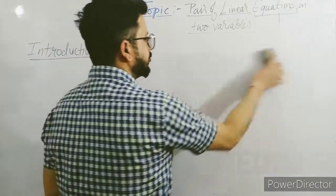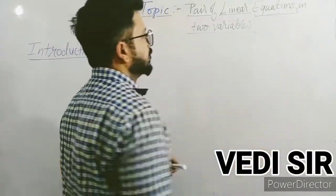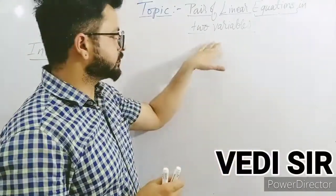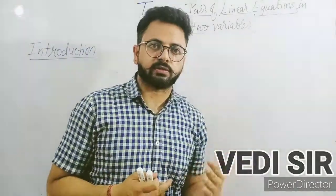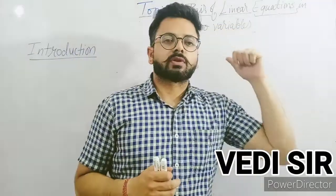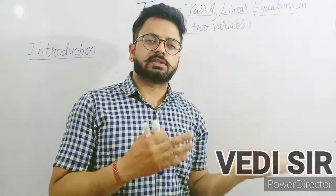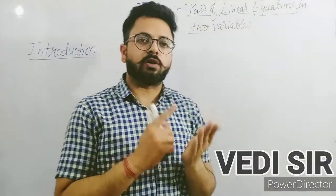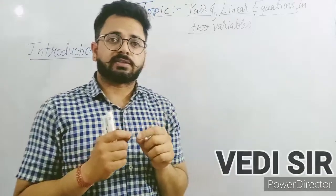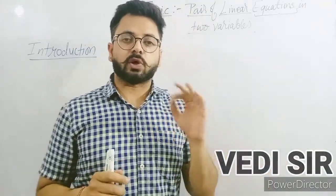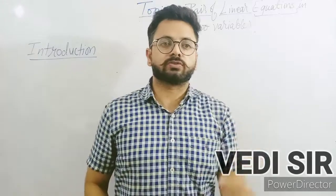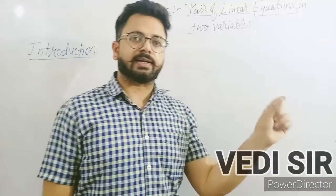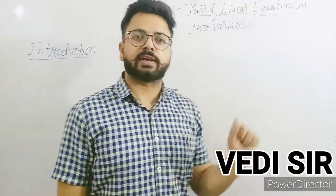Afterwards, 'variables' — we are always dealing with constants and variables. Variables are those whose value varies accordingly. So it can be a, b, c, x, y — any letter can be a variable. It's not mandatory that we always take x as a variable. It's your choice — we can take a to z as variables.